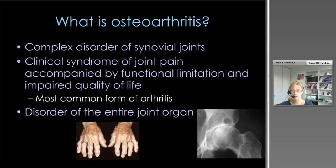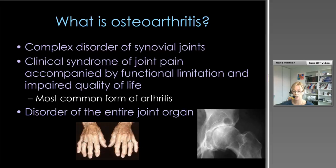What is OA? OA is a complex disorder of synovial joints. It's considered a clinical syndrome primarily of joint pain but also accompanied by functional limitation that can range from mild up to quite severe restriction, inflammation, and culminating in impairments in quality of life. It is the most common form of arthritis. One important thing to remember is that OA is considered a disorder of the entire joint organ — we used to think of OA as primarily a disorder of the cartilage but now we know it is a clinical syndrome affecting the entire joint organ.